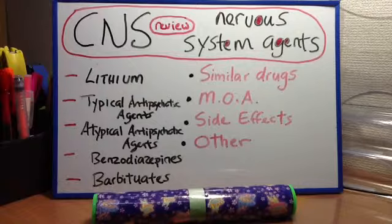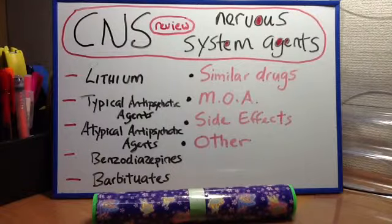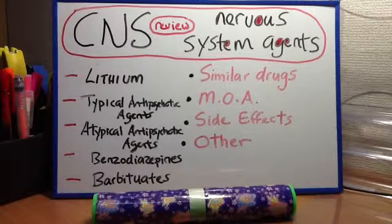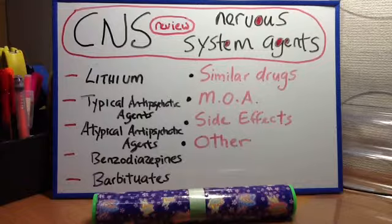Next: atypical antipsychotic agents. Similar drugs include clozapine, risperidone, and olanzapine. MOA: blocks both serotonin 5-HT2 and dopamine receptors. Clinical uses: treats positive and negative symptoms of schizophrenia, and also used for treating delirium. Side effects include mild weight gain.